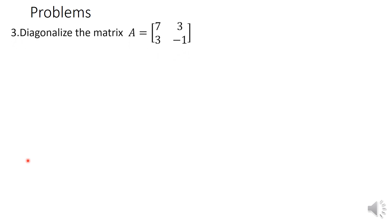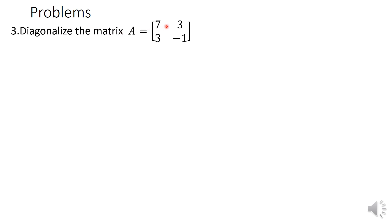Let us see the third problem on diagonalization of a real symmetric matrix. The problem is: diagonalize the matrix A equal to [[7, 3], [3, -1]].